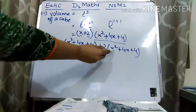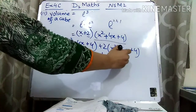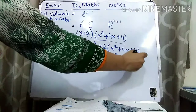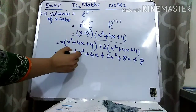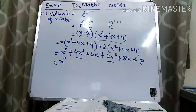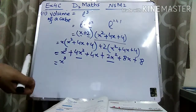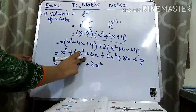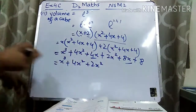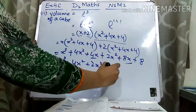When multiplying x with x², we get x³, because when the same variables multiply, their powers add. When multiplying x with 4x, we get 4x². When multiplying x with 4, we get 4x. Now multiplying 2 with x²: we get 2x². Then multiplying 2 with 4x: 2 times 4 is 8, so we get 8x. And 2 times 4 gives 8. Now we collect like terms. x³ has no other like term, so we write x³ as it is.